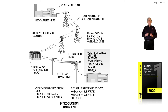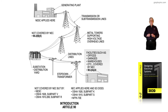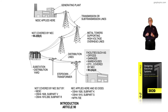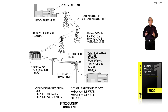On the load side, the service drop conductors connect to the conductors at the weather head at the building location — that is the service point — and from there the NEC takes over. It wouldn't matter if the office, facility, garage, or warehouse belonged to the utility; it would still be covered by the NEC in accordance with 90.2(A).